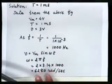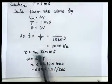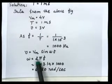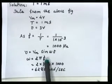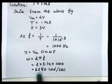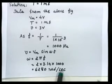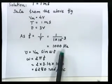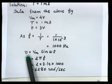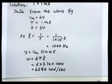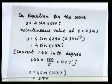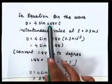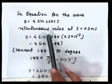The equation for instantaneous induced EMF is v = Vm sin(ωt). Here ω = 2πf. Frequency is known as 1000 Hz, so ω = 6280 radian per second. With omega and frequency known, you can find the instantaneous value.